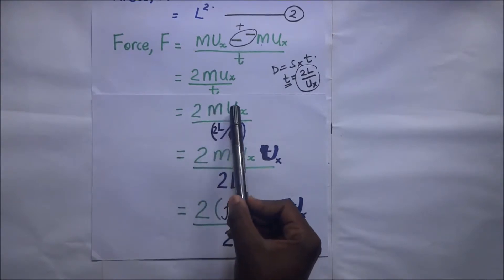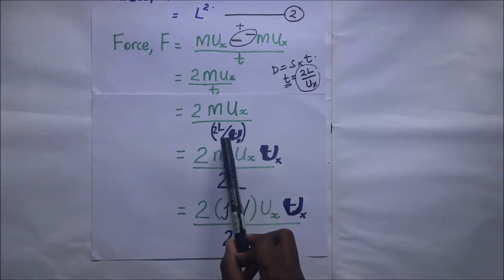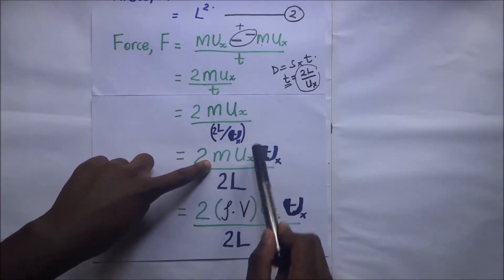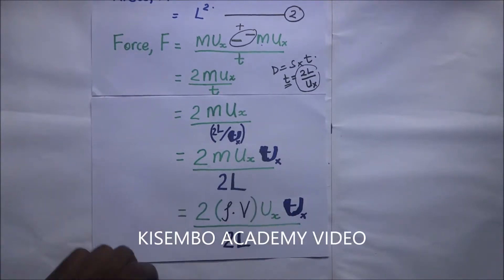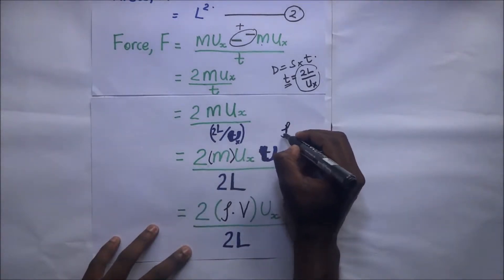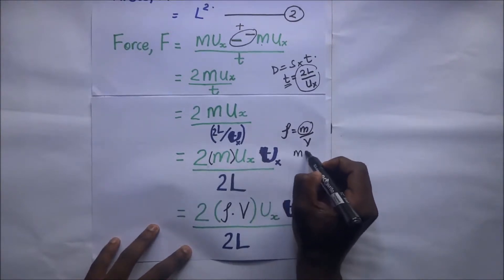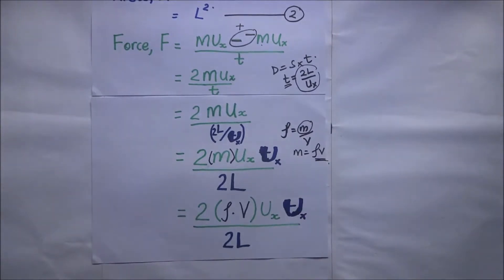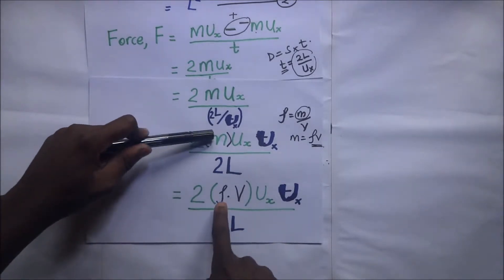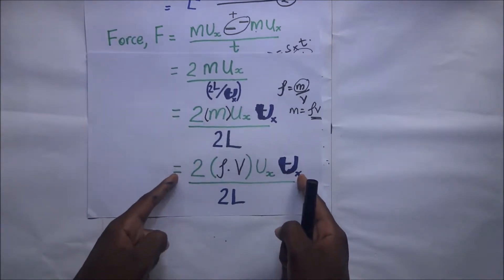When we divide through, this becomes 2·m·ux² divided by 2L. Now, looking at the mass of the particle, we know that density ρ equals mass over volume, so mass equals density times volume. Substituting, the expression becomes 2·ρ·V·ux² divided by 2L.